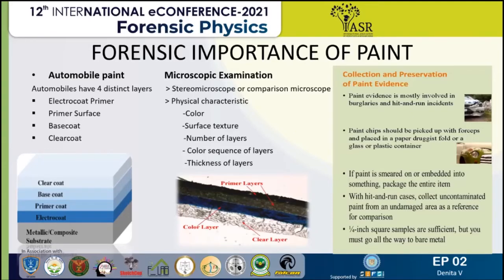Next is how to collect and preserve paint evidence. Paint evidence is mostly involved in burglary and hit-and-run incidents. Paint should be picked up with forceps and placed in a paper, folded into a druggist fold, or placed in a glass or plastic container. If paint is merged on or embedded in something, pack the entire item. The physical examiner selects uncontaminated samples from an undamaged area as a reference for comparison. One square foot samples are sufficient, but you must go all the way to the bare metal.